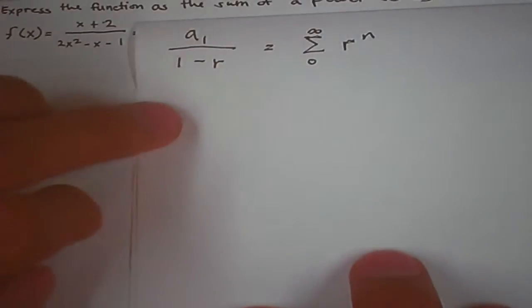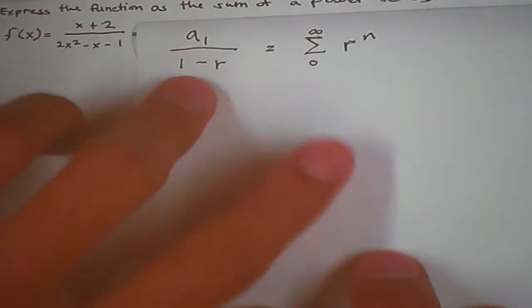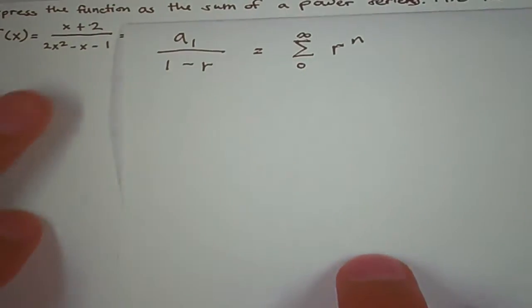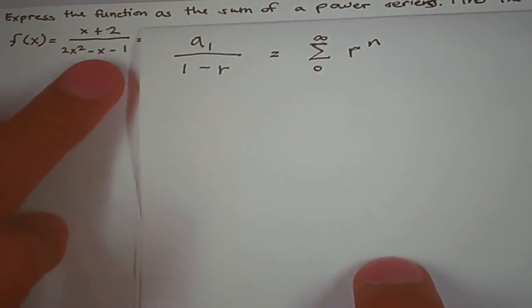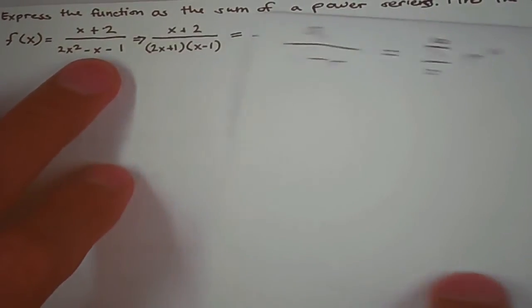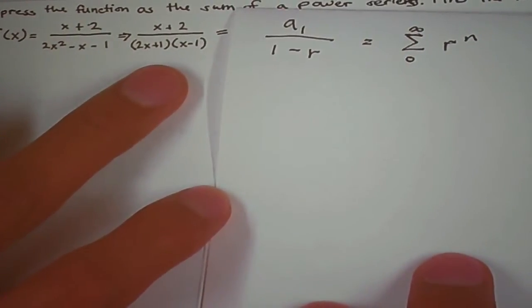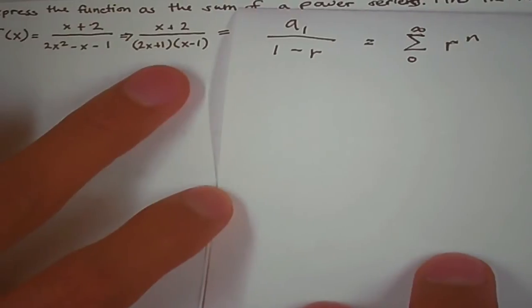We want it to look like this so we can represent it as a power series. Now we can factor the denominator so it would look like x plus 2 over 2x plus 1 times x minus 1.